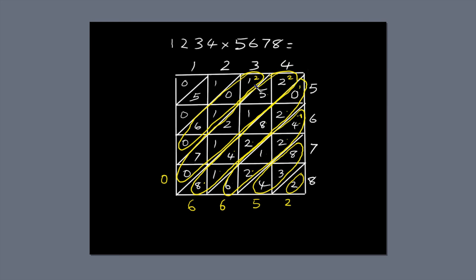2 plus 1 plus 1 plus 6 is 10. Write the 0 next to the diagonal and carry the 1 across to the next diagonal. 1 plus 1 plus 5 is 7. The final diagonal only has the number 0 in it, so write 0 next to the diagonal. Now we just read off the answer. The first number is 0 so we don't need to include that: 7, 0, 0, 6, 6, 5, 2.